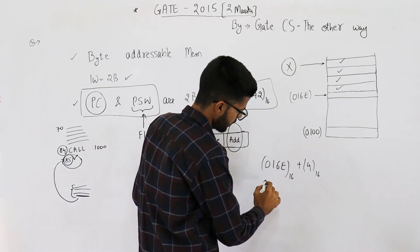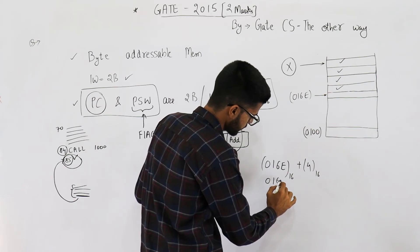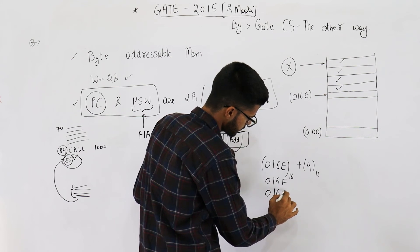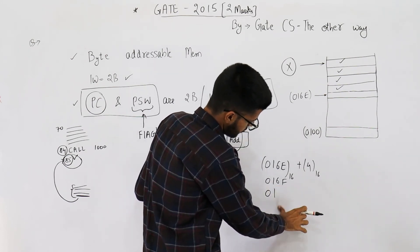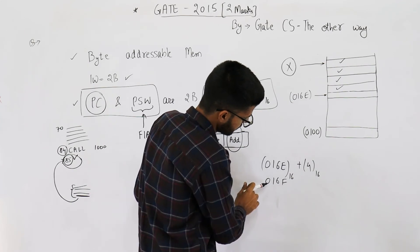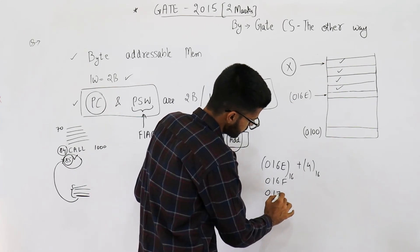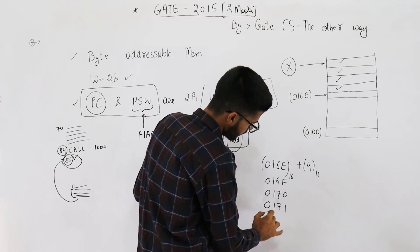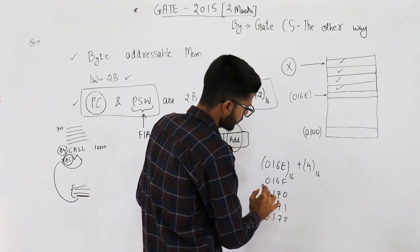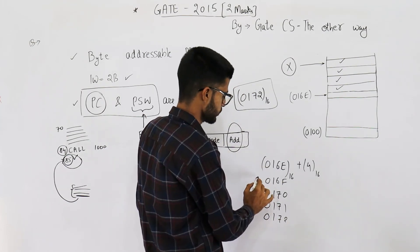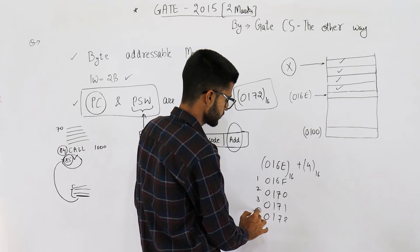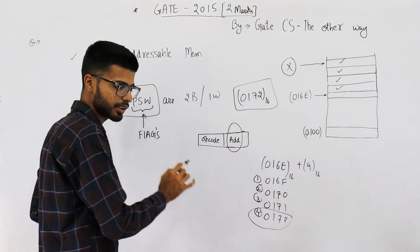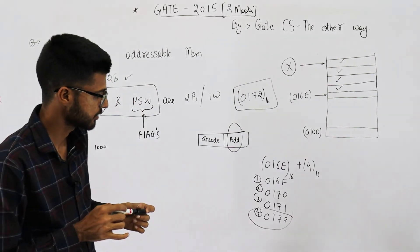016E plus one will be 016F. This number plus one will be 0170. This number plus one will be 0171. Again plus one will be 0172. So 016E plus one is this, plus two is this, plus three is this, plus four is this. So this is our answer. That number is in hexadecimal and it's 0172.